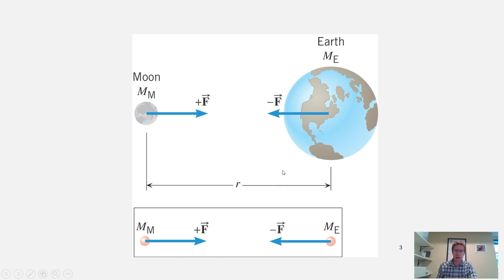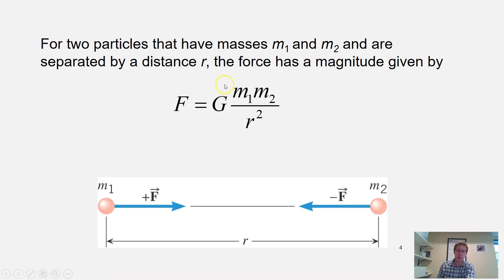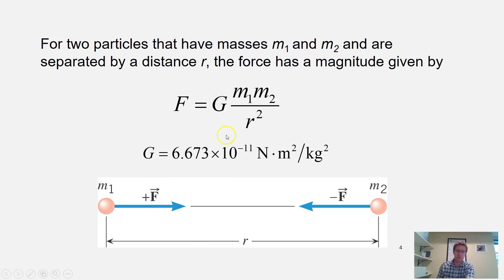How did Newton quantify this gravitational attractive force? He came up with an equation: if you have any two masses m1 and m2 separated by some distance r, the gravitational attractive force F is equal to G times m1 times m2 divided by r squared. G is the gravitational constant, equal to 6.673 times 10 to the negative 11th power, with units of Newton·meters squared per kilogram squared.